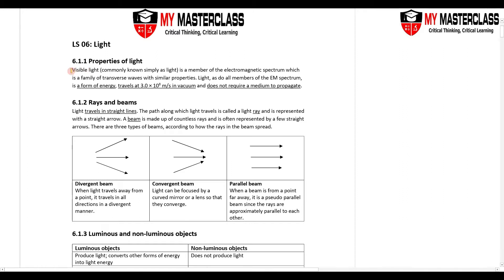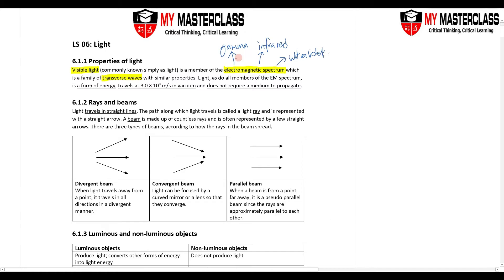Visible light — otherwise we just call it light — is a member of the electromagnetic spectrum. The electromagnetic spectrum is a family of transverse waves with very similar properties. Members include gamma, infrared, and ultraviolet, to name a few. Visible light is one of the many members — the 7 members — of the electromagnetic spectrum.